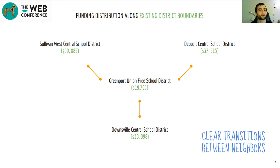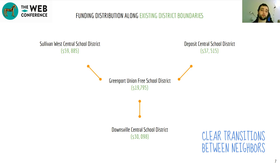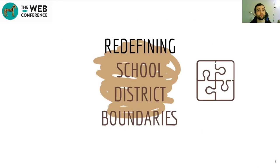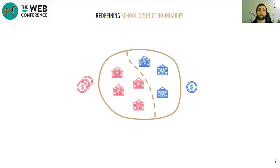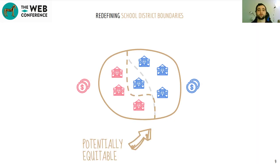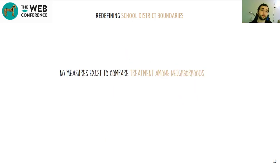We can intuitively describe scenarios we would like to avoid. Closely geolocated districts getting highly different funding is one of them. We understand that location-based factors can influence funding, though it feels odd that a school potentially meters away from being in another district receives substantially lower or higher amounts of funding. We will use this notion when defining our Spatial Inequality Index, as moving schools between districts may create more equitable funding distributions, but currently there are no measures to compare treatment among neighbors.